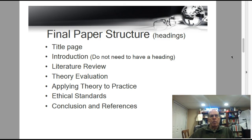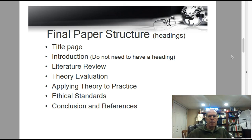For the structure, these would all be level 1 headings. First, you do your title page. Then you have the introduction — you do not actually have to list a heading for that, it's optional. Then list a heading for literature review as a level 1 heading. Next will be theory evaluation and applying theory to practice, then ethical standards, then conclusion, and last of all references.